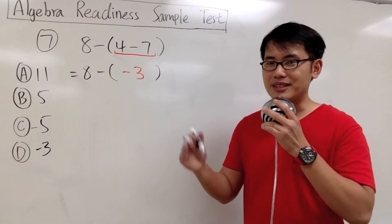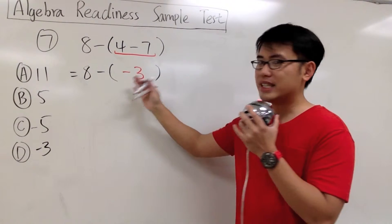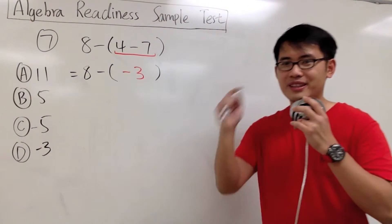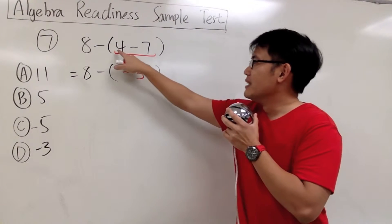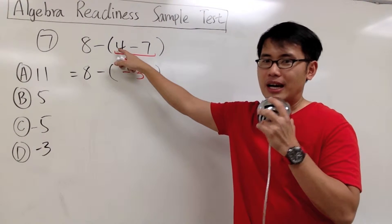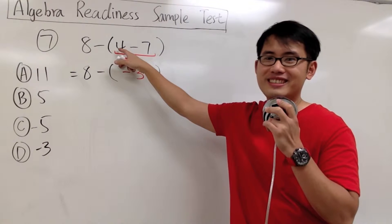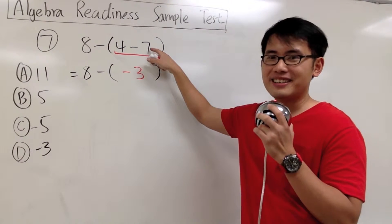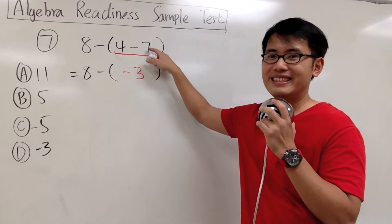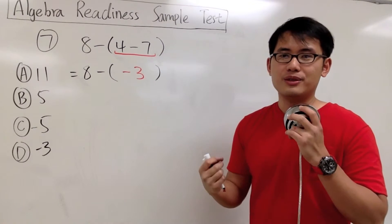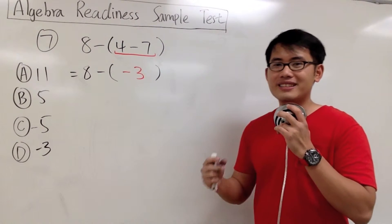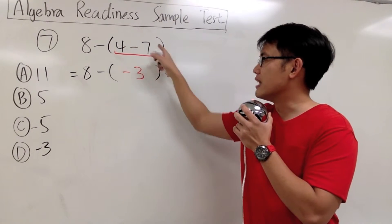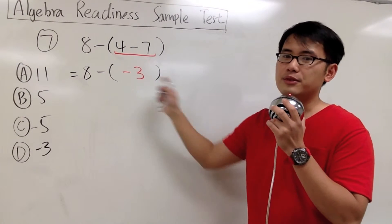Sometimes it's hard to decide if a number is negative or positive. But if you think about it this way, you may have some fun and can get the question right. The positive 4 is like today I go to a casino and I win $4. And then the negative 7 is like tomorrow I go to another casino but I lose $7. So within these two days, I lose a total of $3 — and that's negative 3. So 4 minus 7 gives us negative 3.